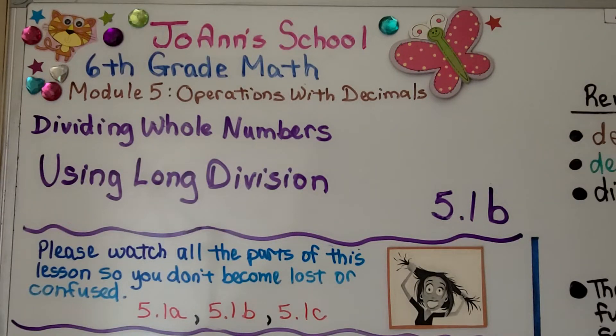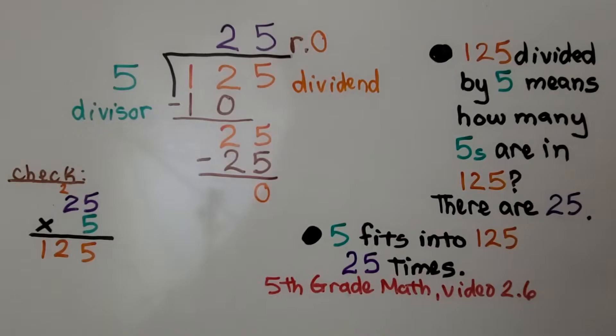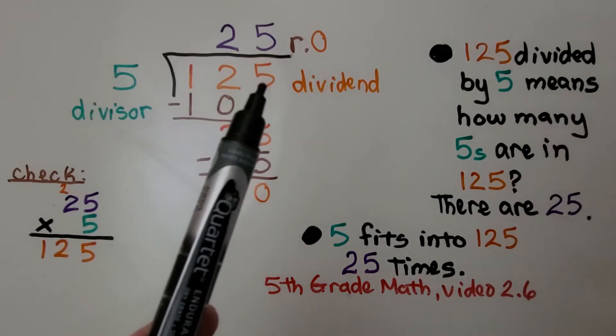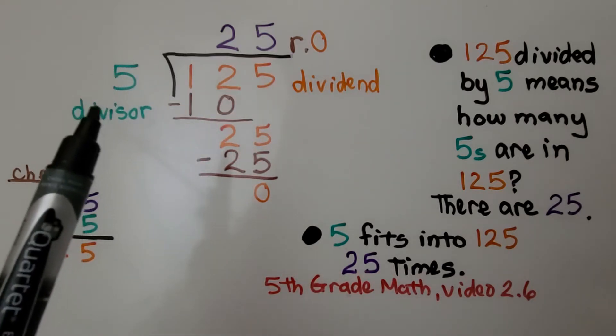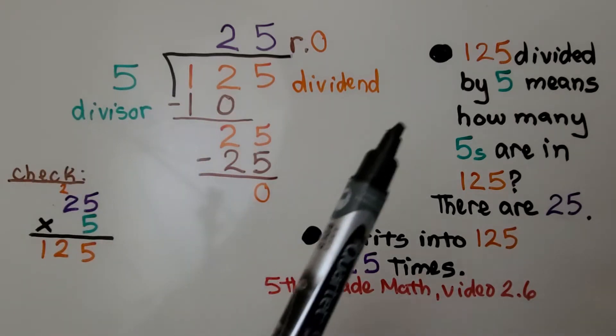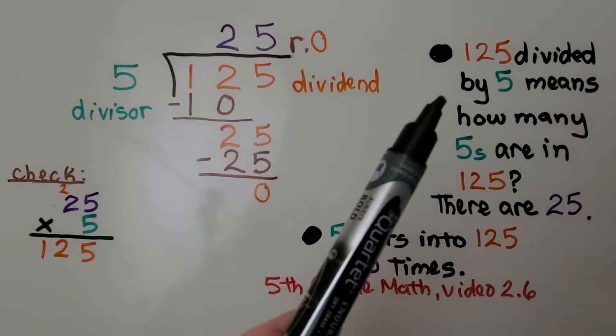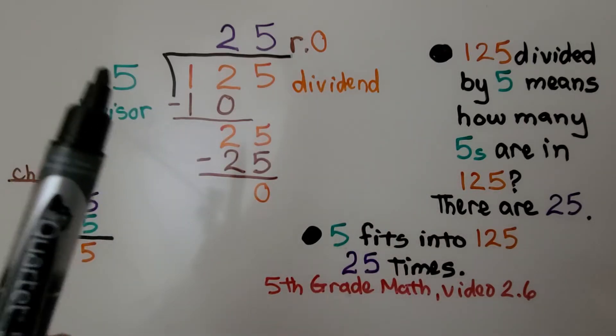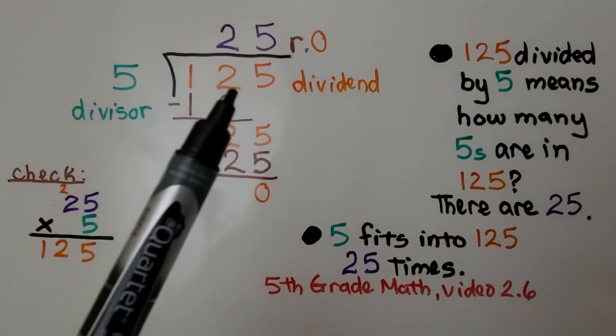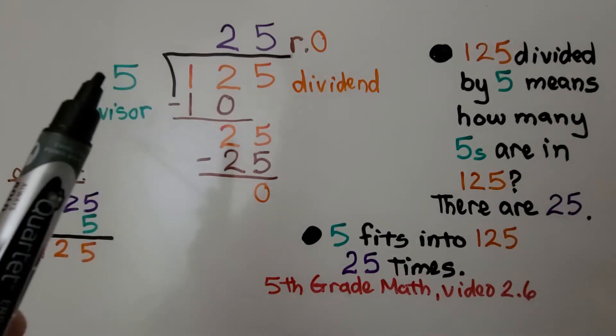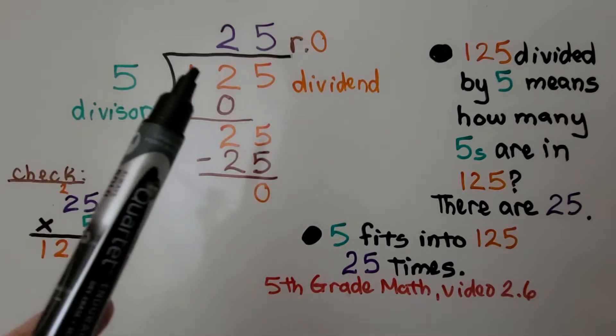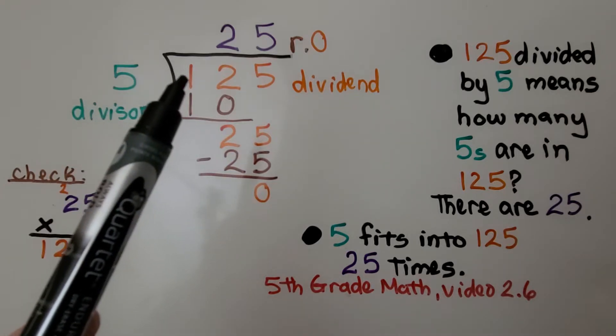Lesson 5.1b: Using Long Division. This problem is 125, that's the dividend, divided by 5, that's the divisor. We start by asking ourselves if the 5 can fit into this 1, and no, it can't.